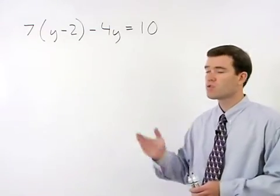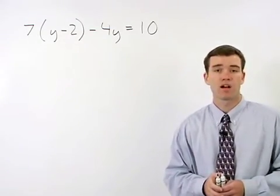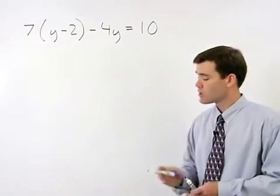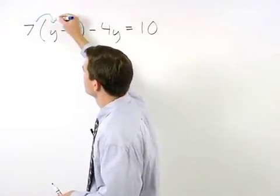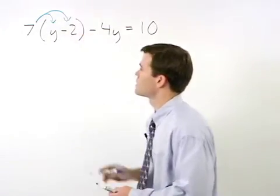In this equation our first task is to simplify the left side. So we start by distributing this 7 through both terms inside the parentheses.